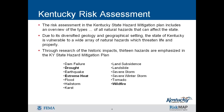The state of Kentucky is vulnerable to a wide array of natural hazards which threaten life and property. Through research of the historic impacts, 13 hazards are emphasized in the Kentucky State Hazard Mitigation Plan. The focus of today's lesson will be drought, extreme heat, and wildfire. Additional modules are available to discuss the other hazards listed in the State Enhanced Hazard Mitigation Plan.